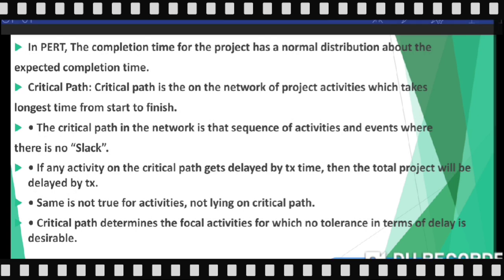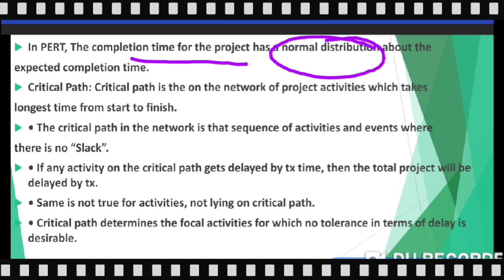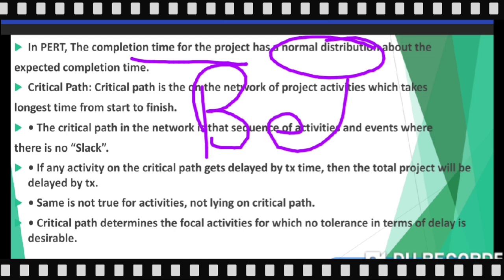In PERT, the completion time for the whole project has a normal distribution — keep that in mind. But for an individual activity, it follows a beta distribution. So we have two kinds of distributions: normal distribution for the whole project and beta distribution for each individual activity.